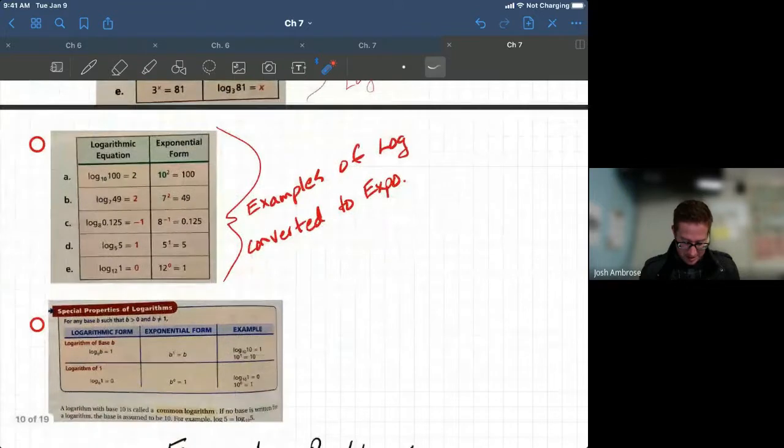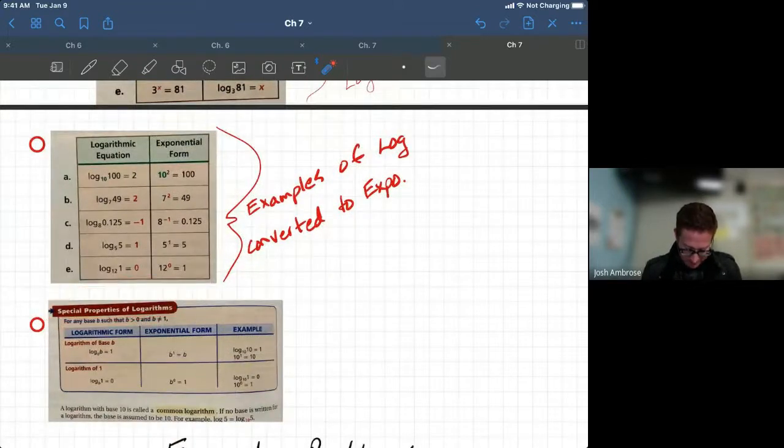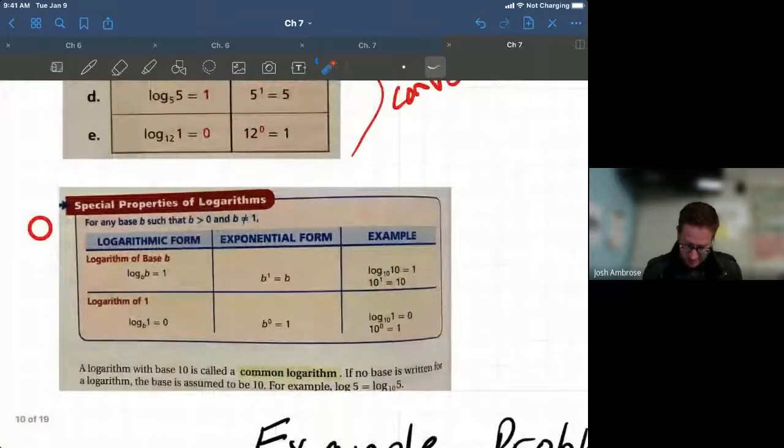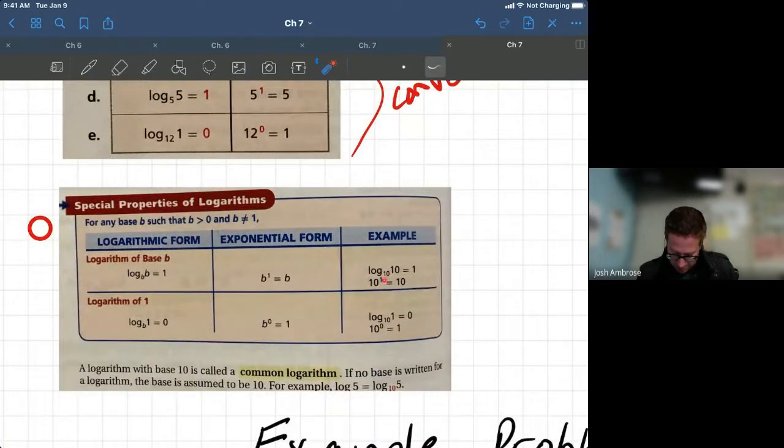More examples and another special property. Take the time right here when we're looking at 1 and 0. Let's zoom in just a little bit so you can see what I'm talking about. If the base matches the whole number, you're looking at a 1 for your answer. So their example there is log base 10. And then you got that whole number.